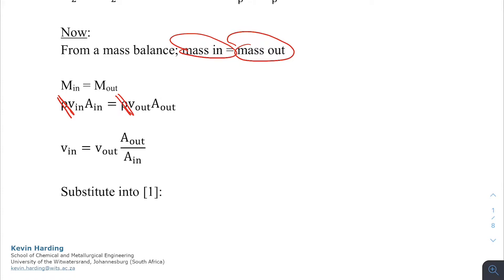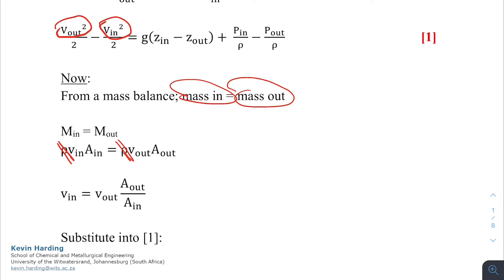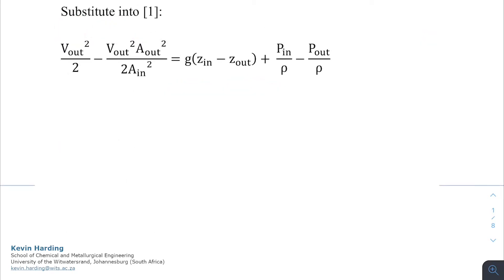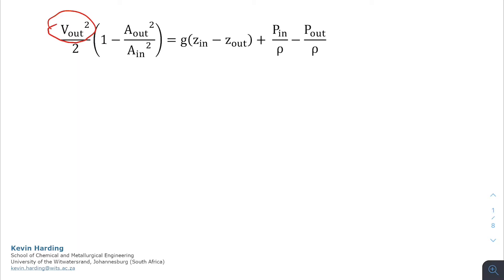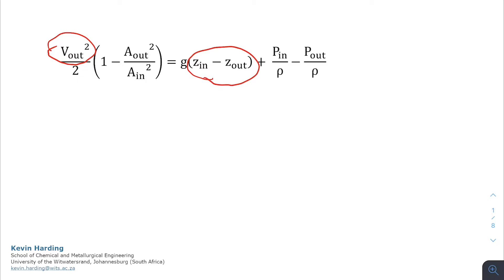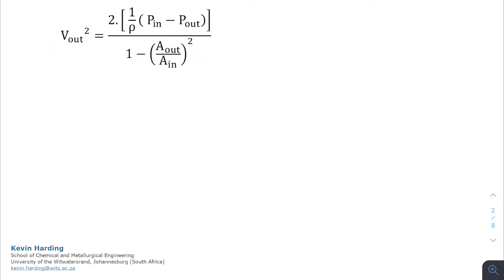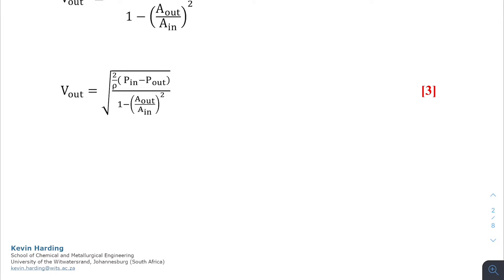We can use that to substitute into equation 1 — the mechanical energy balance. The v-in term has now been replaced by v-out times A-out squared divided by 2 times A-in squared, from the mass balance. We can then factor the velocity term out, so we have a single v-out squared term on the left. We also assume this small section of pipe is at a constant height, so the difference in z is zero and the z-in minus z-out term falls away. We simplify further to get v-out squared on the left equal to 2 times the pressure bracket term divided by one minus (A-out over A-in) squared. Finally, taking the square root gives us equation 3 — an explicit equation for v-out.